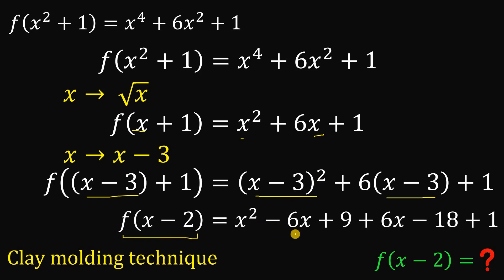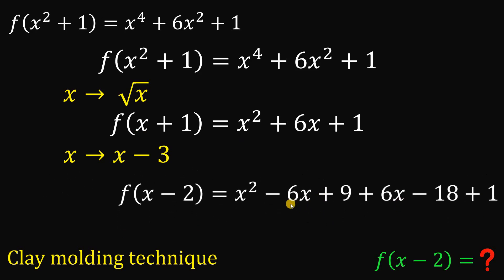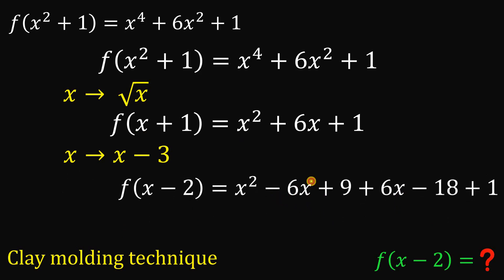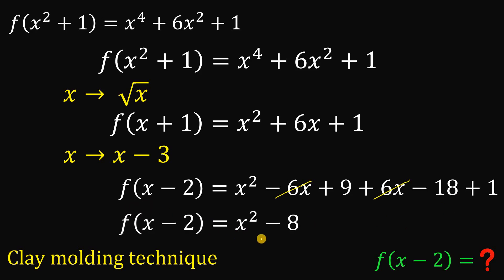Simplifying: x minus 3 raised to the power of 2 gives x squared minus 6x plus 9. Then 6 multiplied by x minus 3 gives 6x minus 18, then bring down 1. Combining like terms: negative 6x and positive 6x cancel to 0. Then 9 plus 1 is 10, minus 18 is negative 8. So f of x minus 2 equals x squared minus 8.